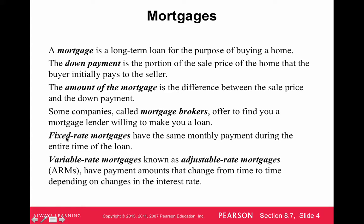Currently, interest rates are really low — it's 2016 — so I would probably go for a fixed-rate mortgage now, because interest rates can generally probably go up in the future. If interest rates are really high and you think they're going to go down, you might want an adjustable-rate mortgage. But most mortgages now are fixed-rate 30-year or 15-year mortgages.